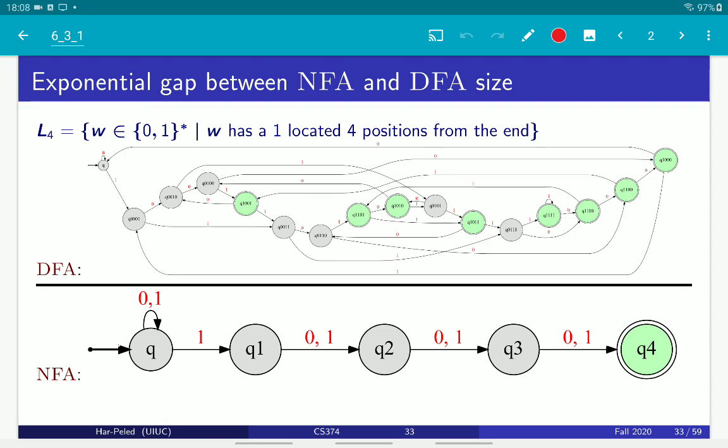And here's the concrete example. This is the language of binary strings such that there is a 1 in the fourth location from the end of the string.